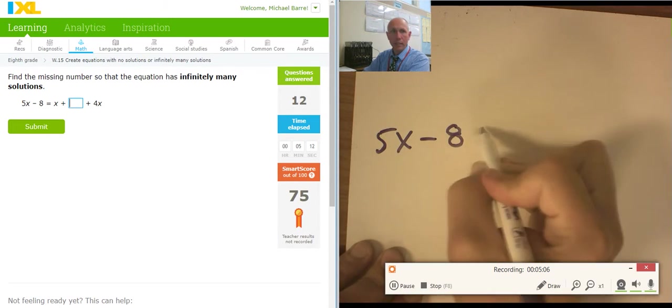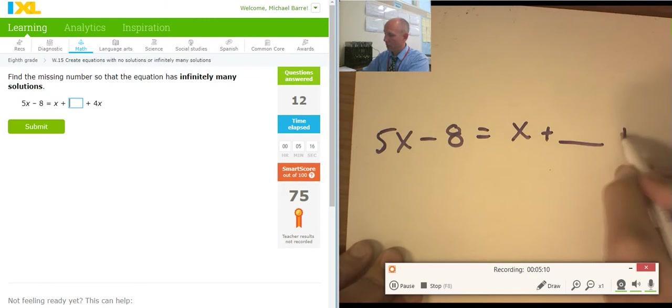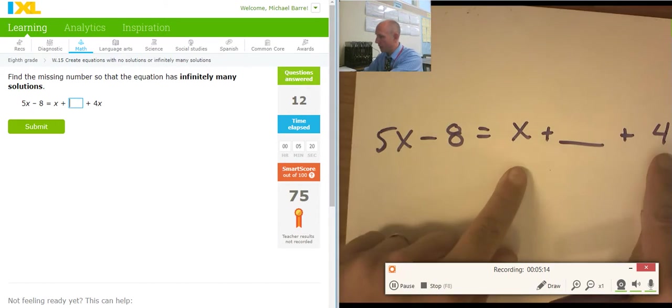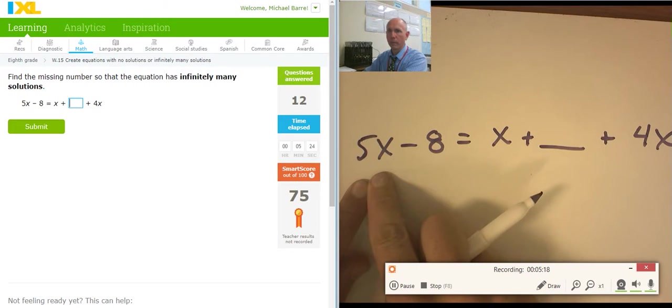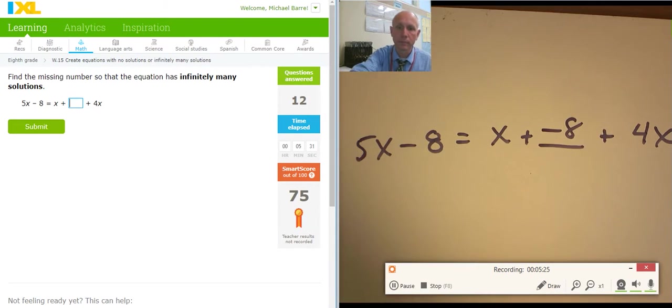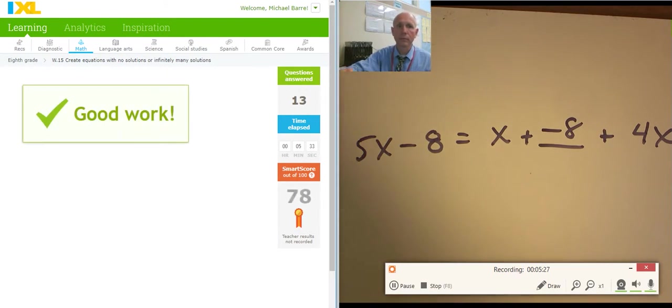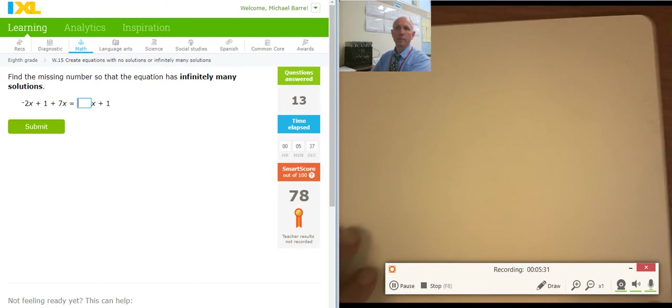5x minus 8 equals x plus blank plus 4x. Okay. So 4x and x. So this is 5x canceling with a 5x. I know. I'm off the board. I apologize. I'm off the video. And I want infinite solutions. So I need everything to cancel. So negative 8 cancel with negative 8. I'll try to be better with the board.